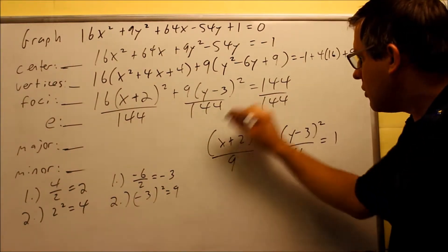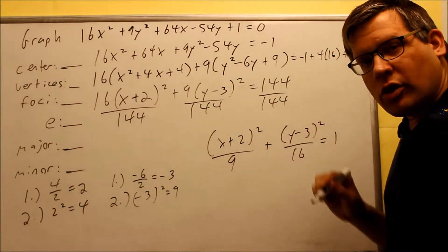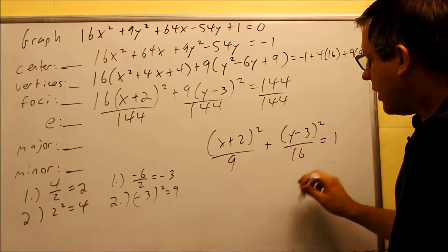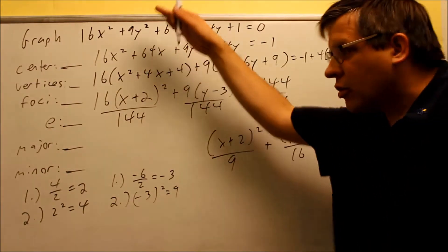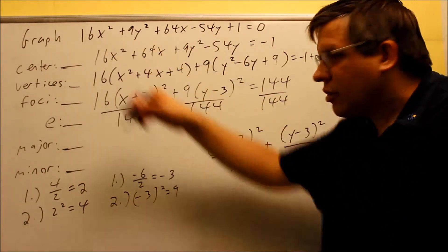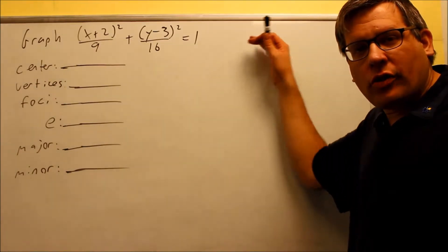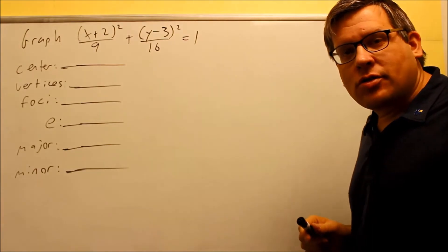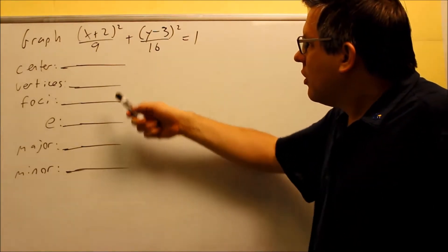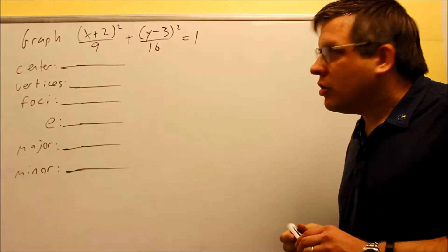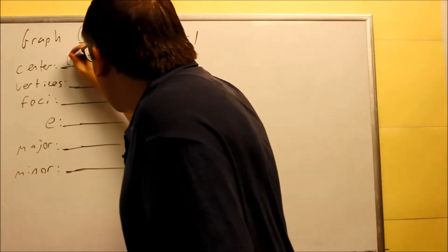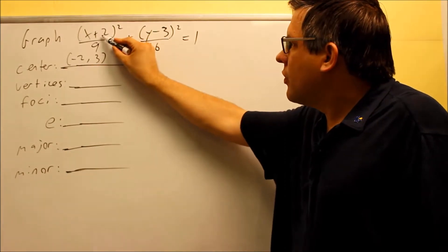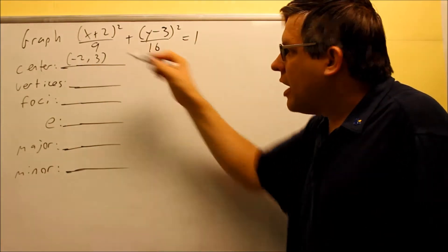We're still not in proper form yet because we need this equal to 1. So I divide everything by 144, giving us: x plus 2 squared over 9, plus y minus 3 squared over 16, equals 1. Now we've got it into the form we can work with. The center is always the opposite sign of each value inside the parentheses, so the center is negative 2 and positive 3.